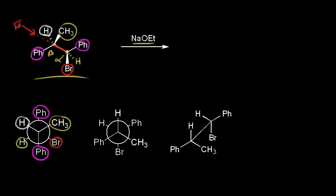The E2 mechanism requires an antiperiplanar hydrogen and bromine. Looking at this Newman projection, we already have that — the hydrogen in white is already antiperiplanar with the bromine. So we already have what we need for the E2 mechanism to occur. On the right is the same Newman projection, just turned a little bit to the right.